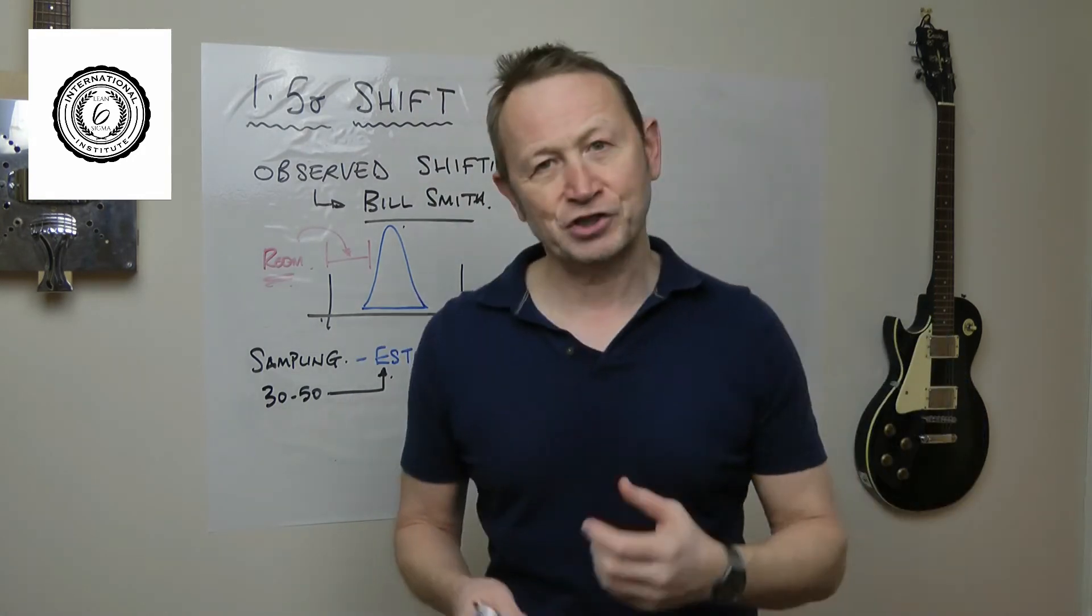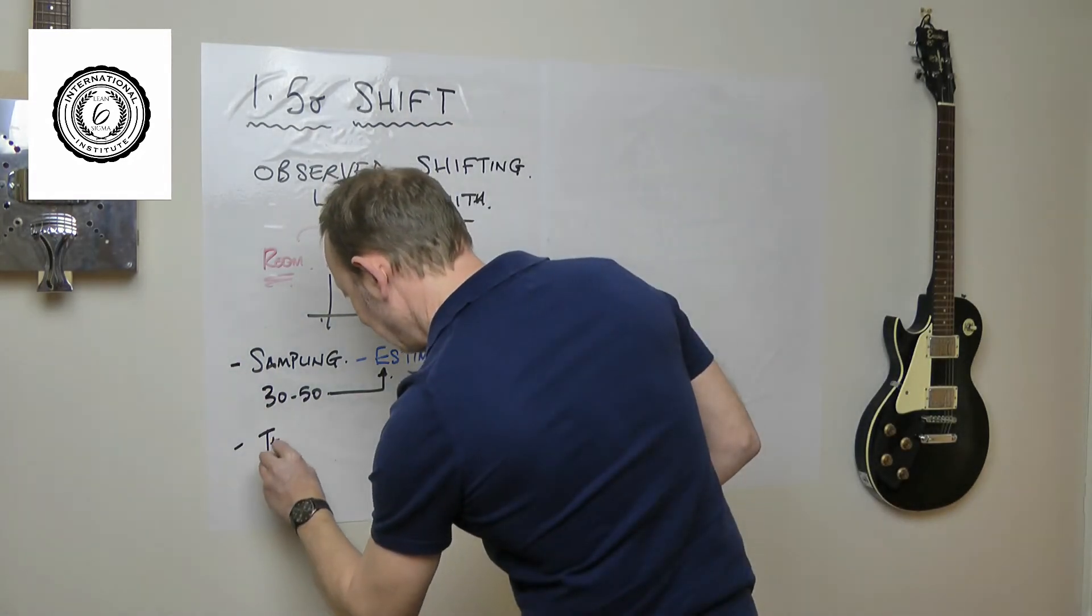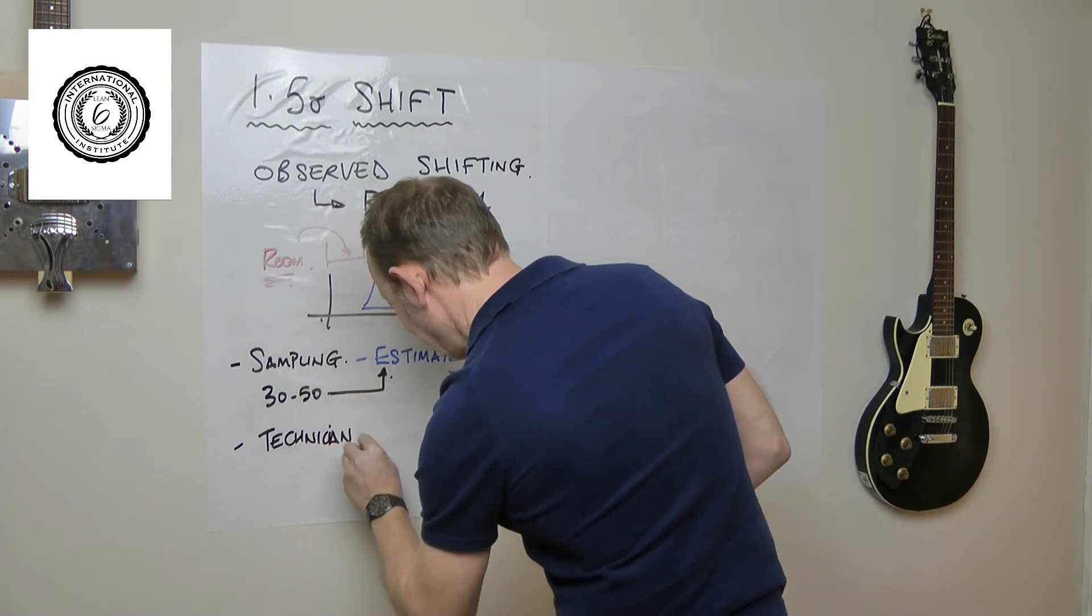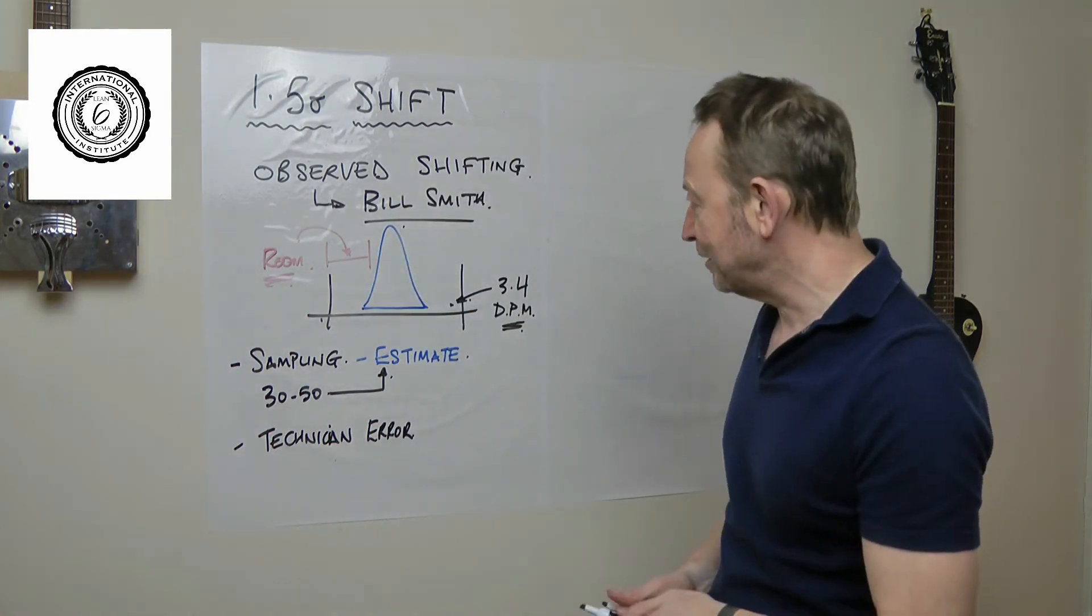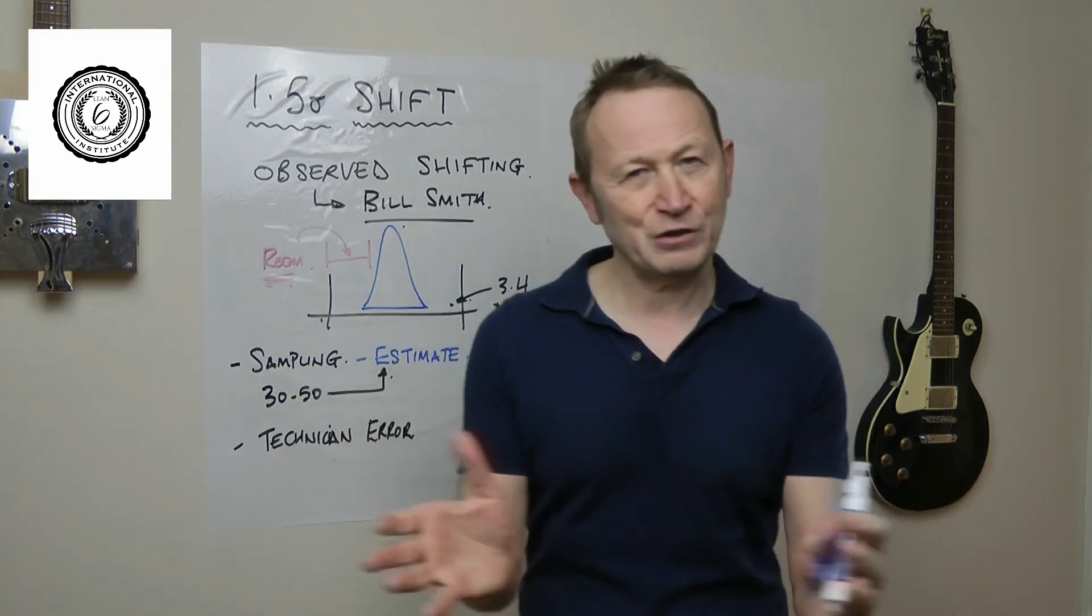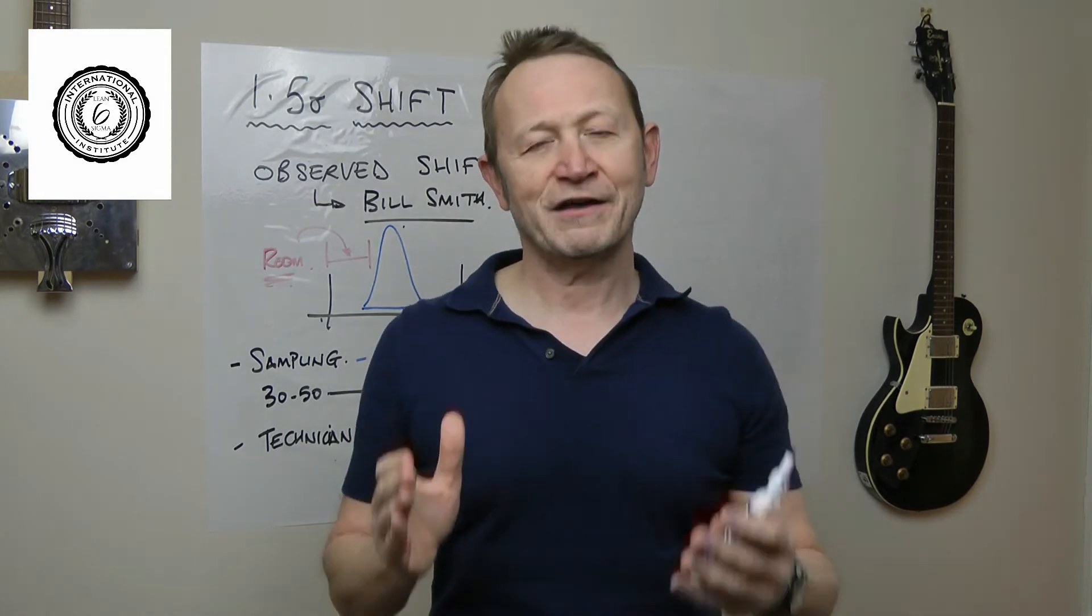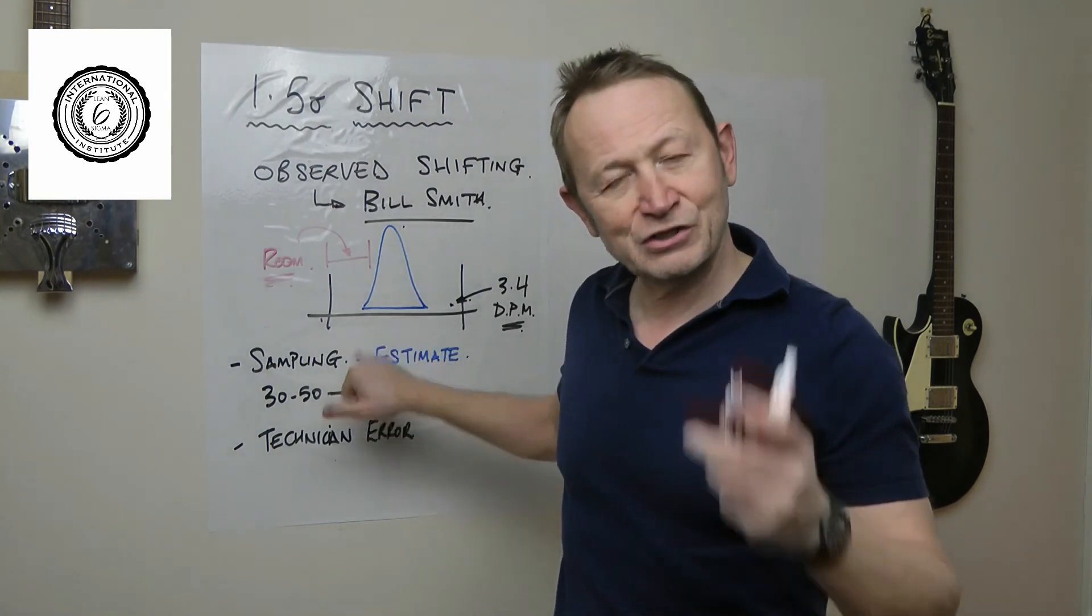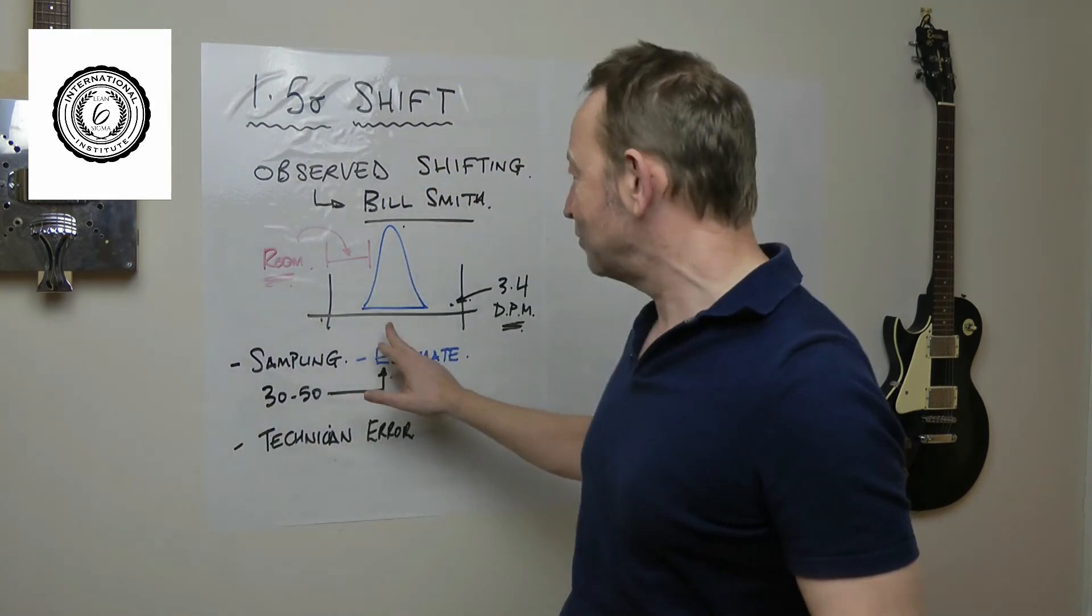The next reason for the shift is actually the technicians. You might call it technician error. What this basically means is that it's one of the most difficult jobs the technician ever does, to try and decide whether he is on the center of the tolerance, whether he's hitting the nominal. Let's have a look at why that's the case.